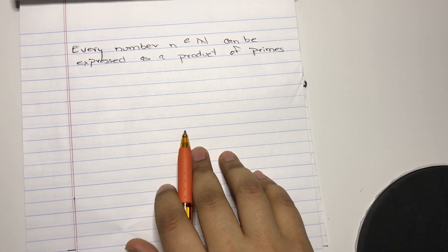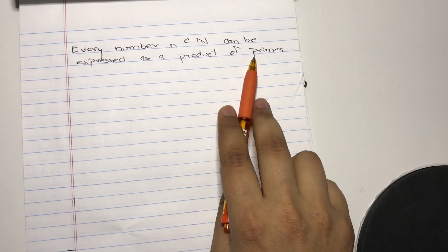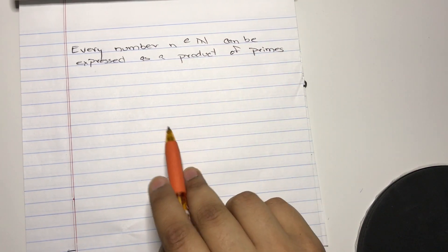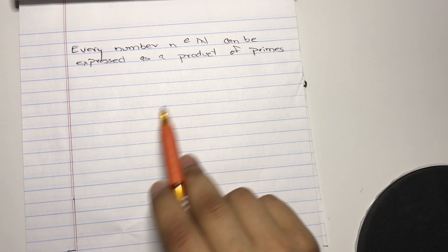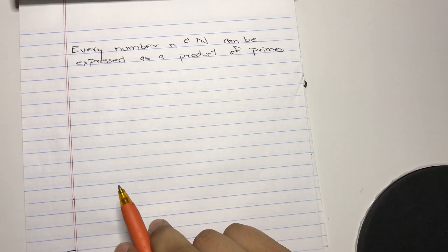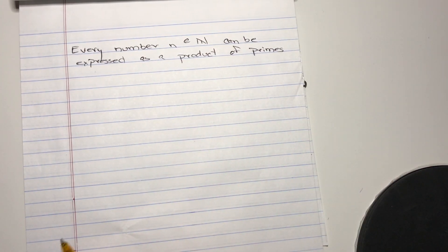Before we get started, I just want to tell you what a prime is. A prime is any number that is divisible only by itself and one. Every other number is known as composite. Okay, let's get started.